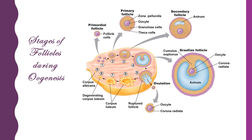With the help of this diagram we will now understand the stages of development of a follicle during oogenesis. The follicle develops along with the oocyte during the process. In spermatogenesis, the developing spermatocytes draw their nutrition from Sertoli cells, but in oogenesis developing oocytes get their nutrition from follicular cells.